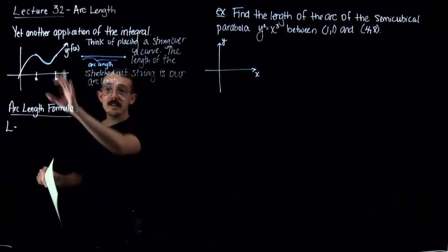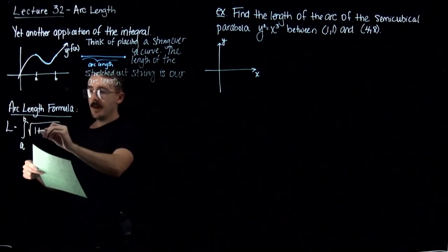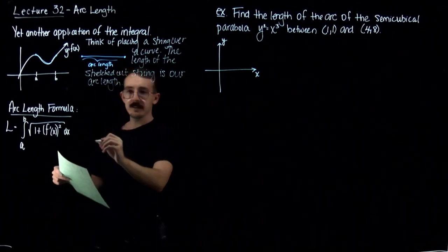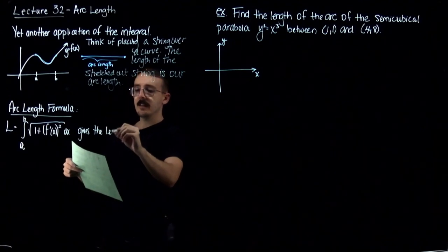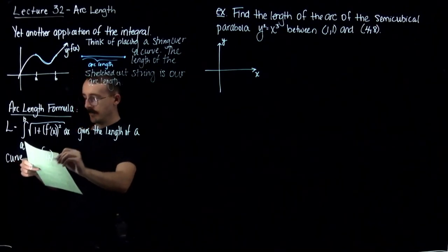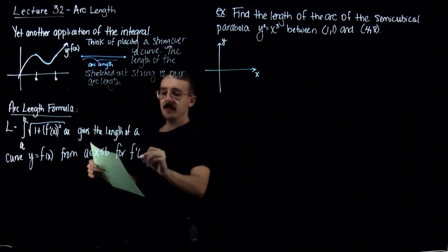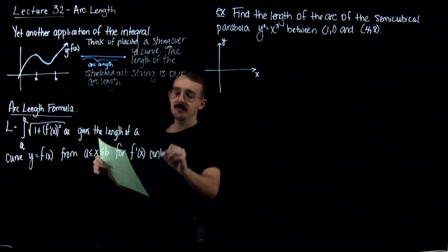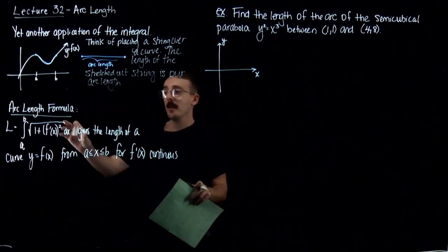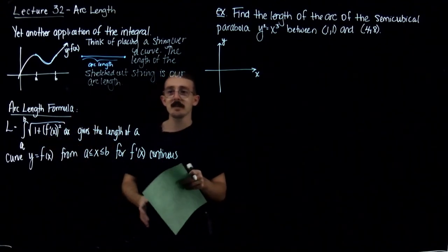The formula for finding this arc length is as follows. We have the integral from a to b of the square root of 1 plus the derivative of f of x, squared — that's all under the square root — dx. This gives the length of a curve y equals f of x from some a to some b, as long as the derivative of f is continuous. This is the main formula we're going to be using, and we'll see variations of it in later lectures, but they're all going to look very similar to this.